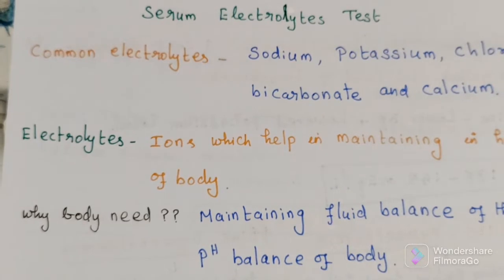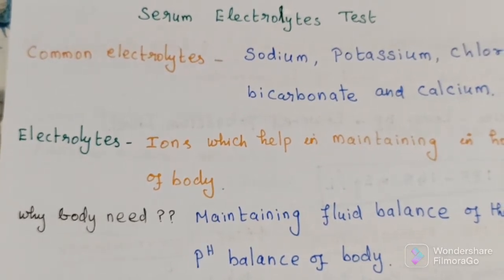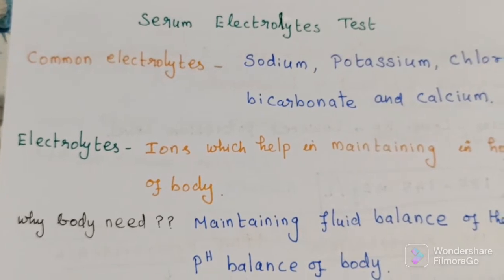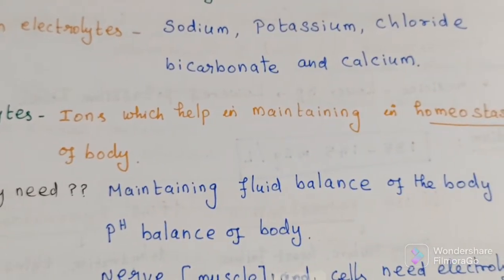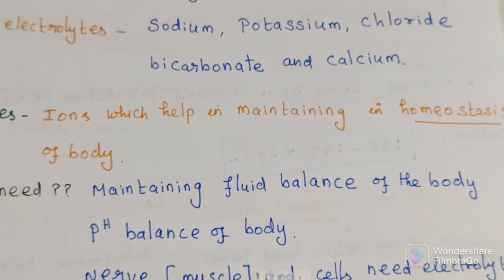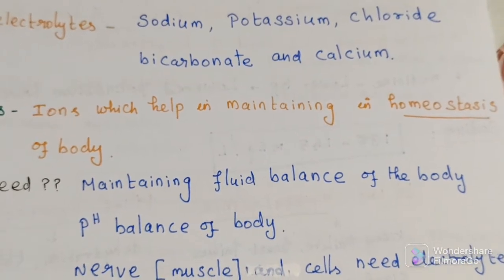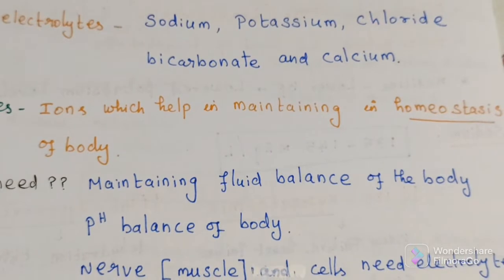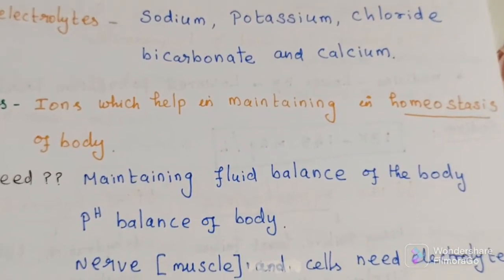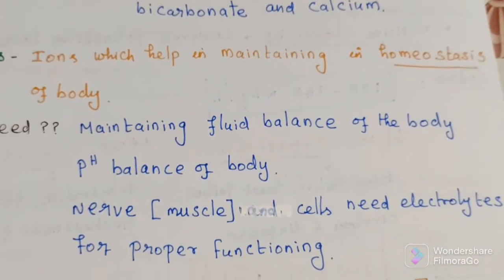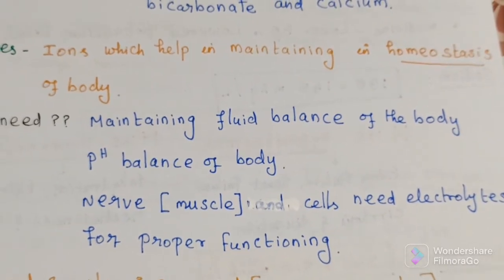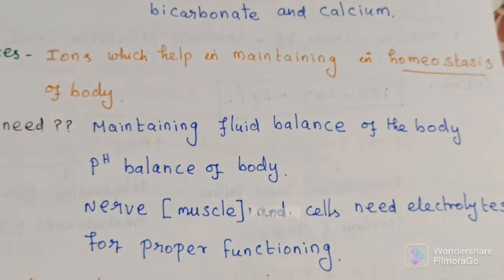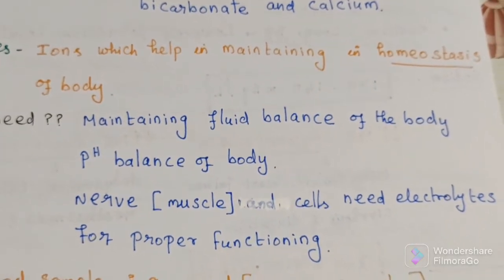Why does our body need to balance the amount of electrolytes? Electrolytes are important in maintaining fluid balance of the body as well as the pH balance of the body. Apart from that, certain cells like nerve cells and muscles need electrolytes to maintain the voltage across the membrane so that they can function properly.